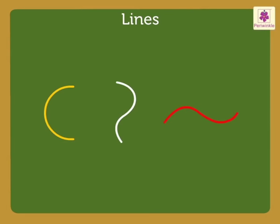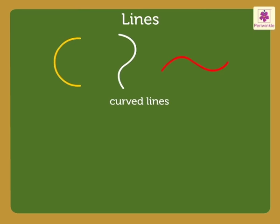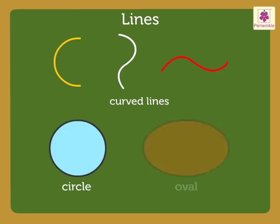Now look at these lines. These are curved lines. We use curved lines to draw shapes like a circle and an oval.